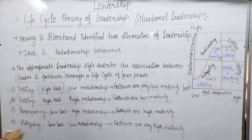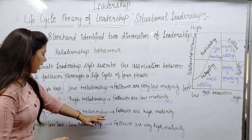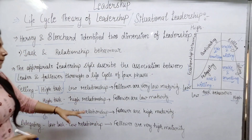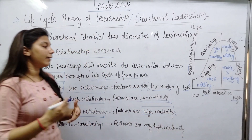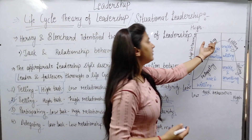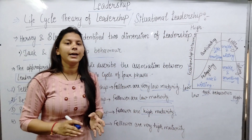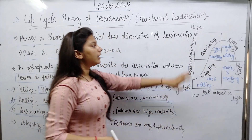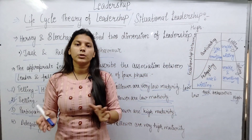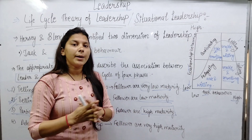The third phase is Participating, which involves low task and high relationship. Followers here are of high maturity — they are able but unwilling. For example, if you have a job with a daily routine — doing the same work every day — you become bored. You have the ability, but you are no longer motivated or willing.